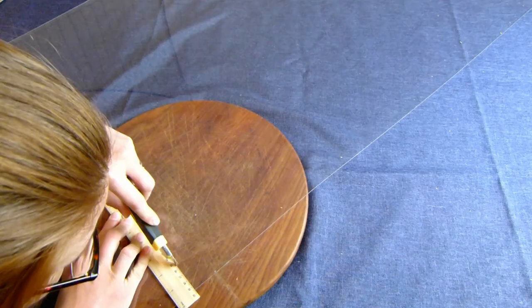You can use a whiteboard marker to trace the size onto your plexiglass. If you have real glass, you could ask a glazier to cut it to size for you.